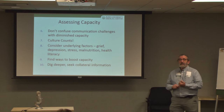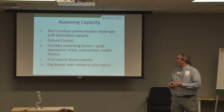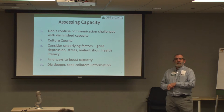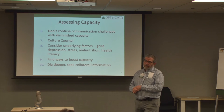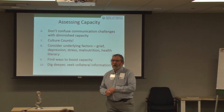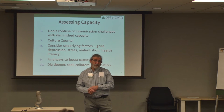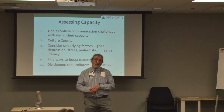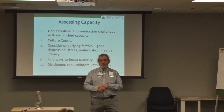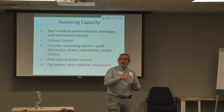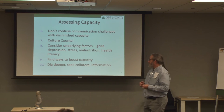Underlying factors: things like grief — if someone's just recently lost a loved one, they're just not thinking very well. Depression, in my world, is often referred to as pseudo-dementia. When someone's depressed, they can't concentrate, don't focus, are forgetful, don't make decisions — they're stuck. That looks a lot like dementia when you're 85. Sometimes we have to look at whether they're getting treated for depression before worrying about their capacity to make decisions.